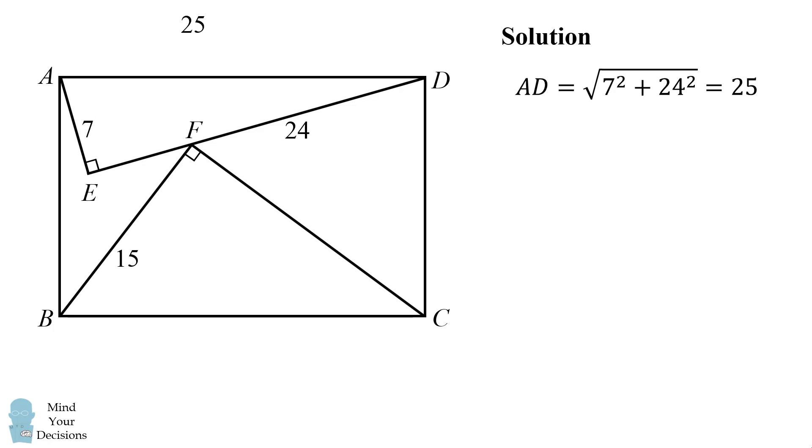Next, we'll have that BC is the opposite side of the rectangle, so BC is equal to AD is equal to 25.